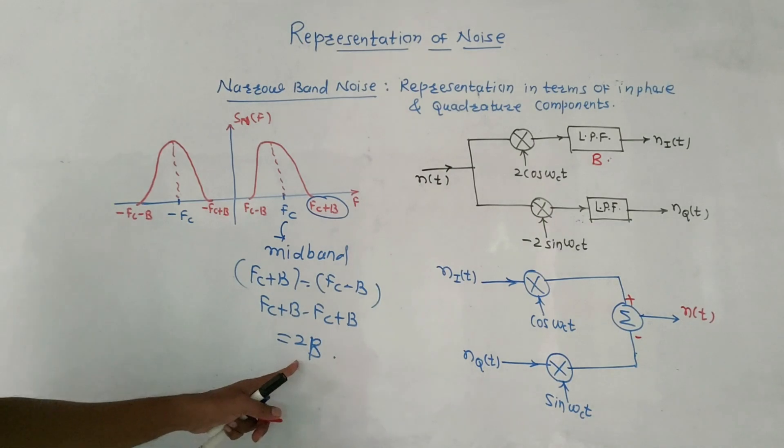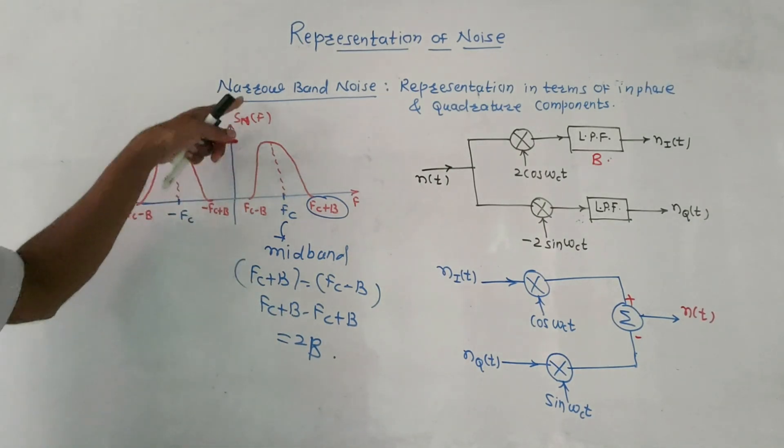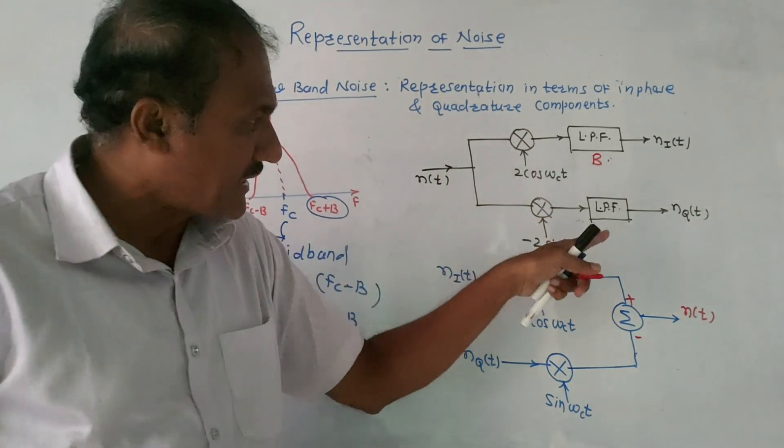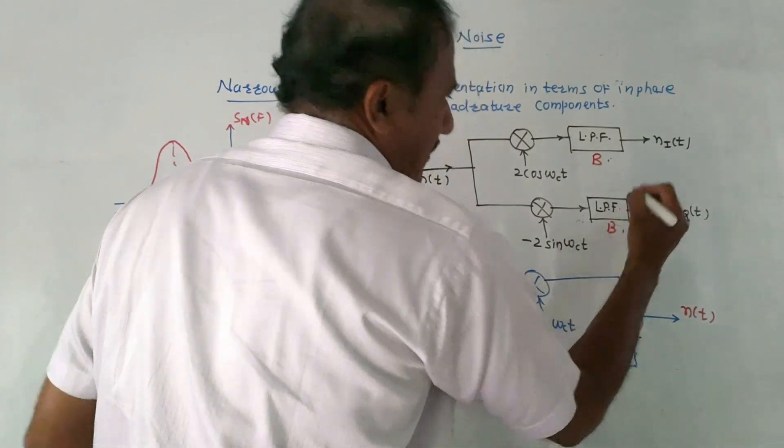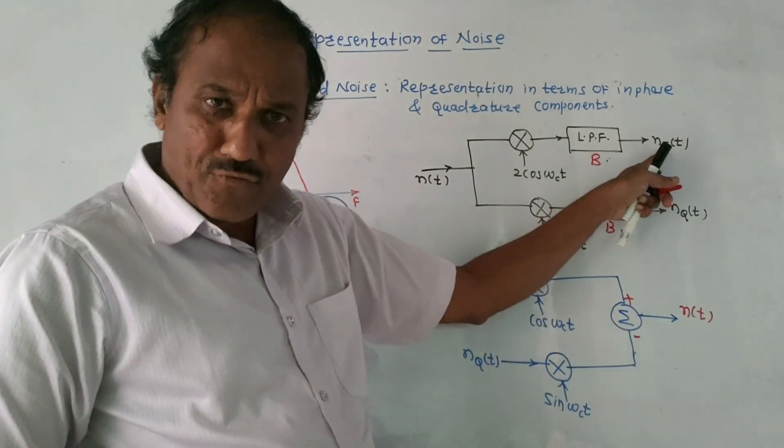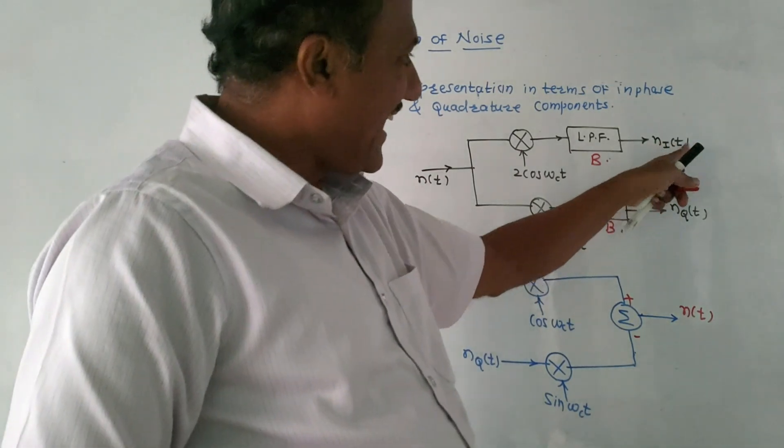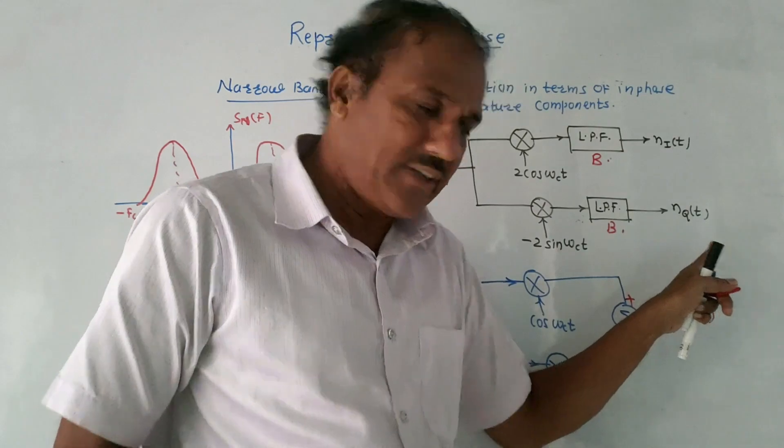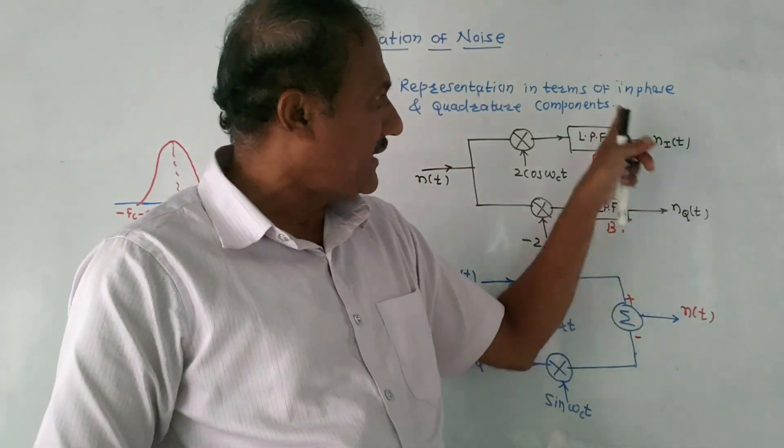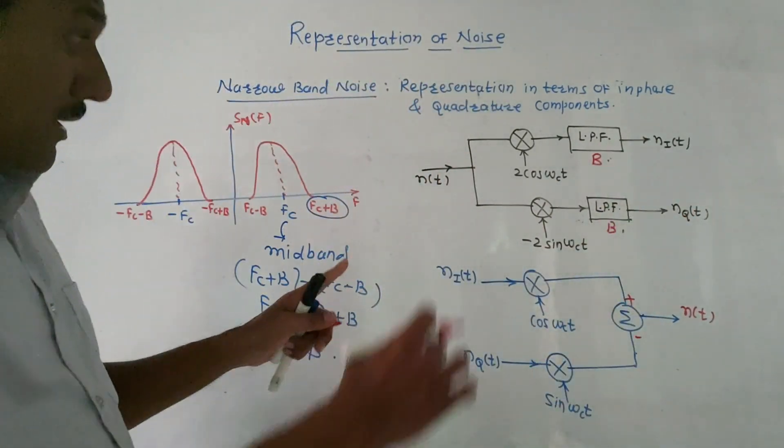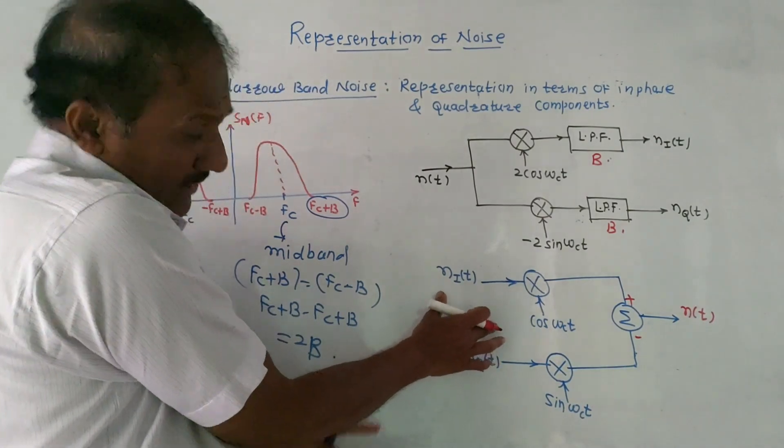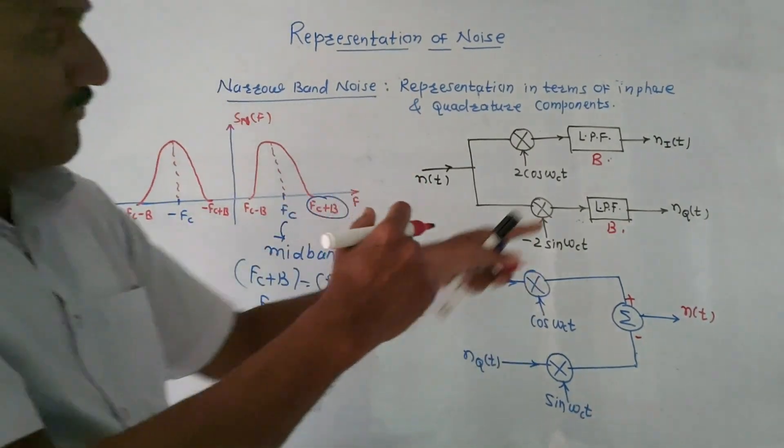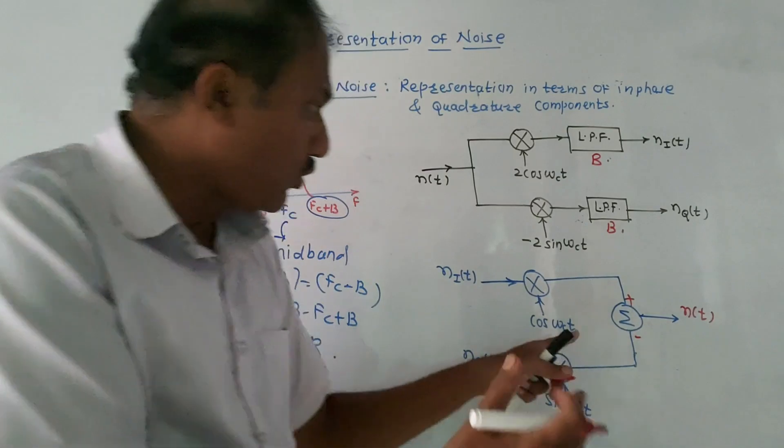And output of this multiplier is applied to low pass filter. The bandwidth of low pass filter is B, which is half of the bandwidth of this PSD of narrow band noise which we discussed. This is B, low pass filter's bandwidth. So at the output of first LPF we will be getting ni(t) - that is in-phase component - and at the output of second filter you will get nq(t) - that is quadrature component.